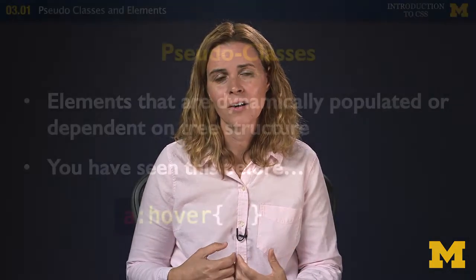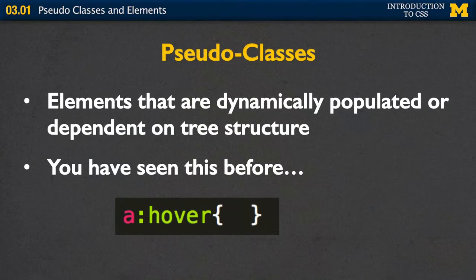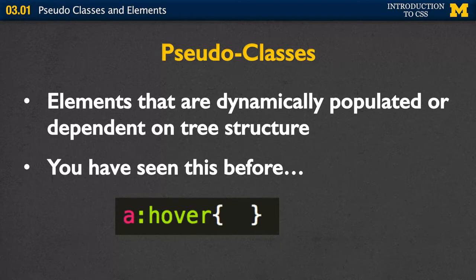Welcome back, everybody. Today, we're going to talk very briefly about pseudo classes and elements. We've been working with different types of elements throughout this entire course and how we can structure and style them. Pseudo elements are kind of different from the other things we've seen before in that they are very dependent on the DOM structure, and some of them are actually dynamically populated. You have seen this before back when we talked about styling links because the links had those different states.